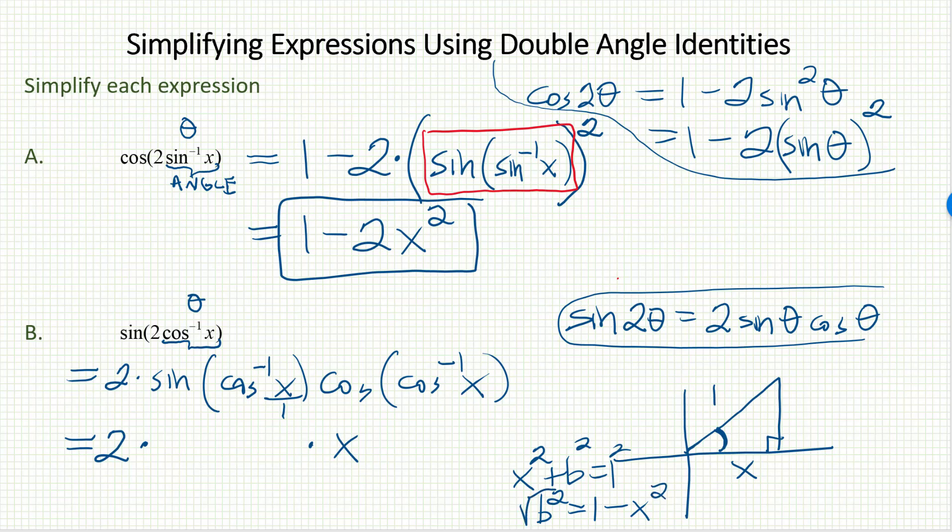I am in the first quadrant, so I know it's positive. And so, I end up with square root of 1 minus x squared. There's no way to simplify that any further.